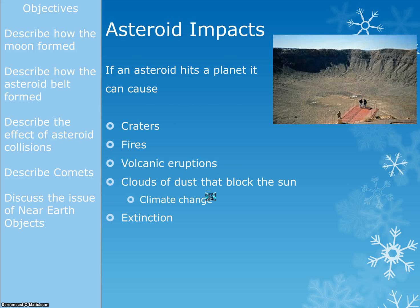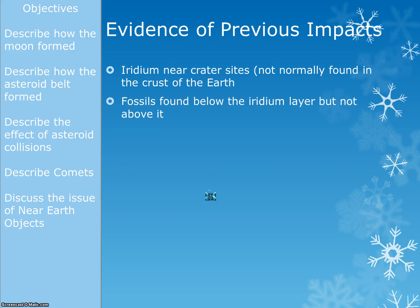If an asteroid were to hit a planet, it can cause craters, fires, and volcanic eruptions. It can cause clouds of dust to be emitted into the atmosphere, which can then cause climate change. All these things can lead to the extinction of species. We know these have happened on Earth. The evidence includes crater sites, and iridium — an element not normally found near the surface of the Earth — which has been found near these craters, indicating it's been thrown up or brought by the meteor, showing there's been a big disturbance.